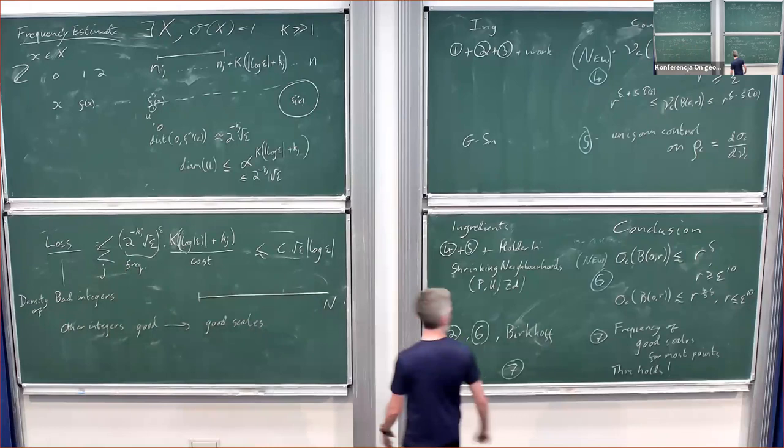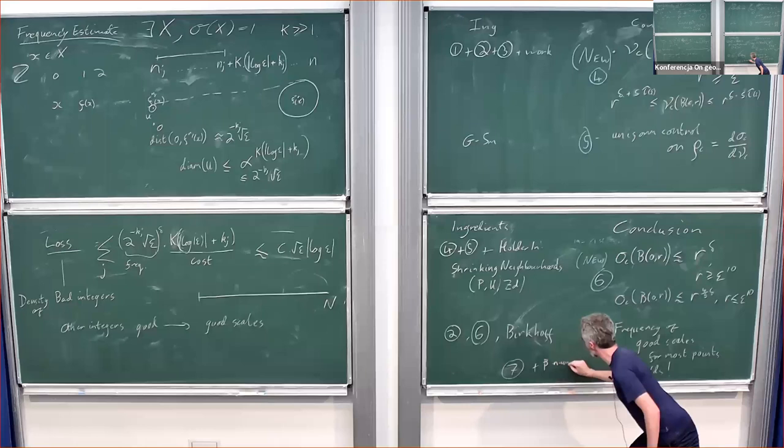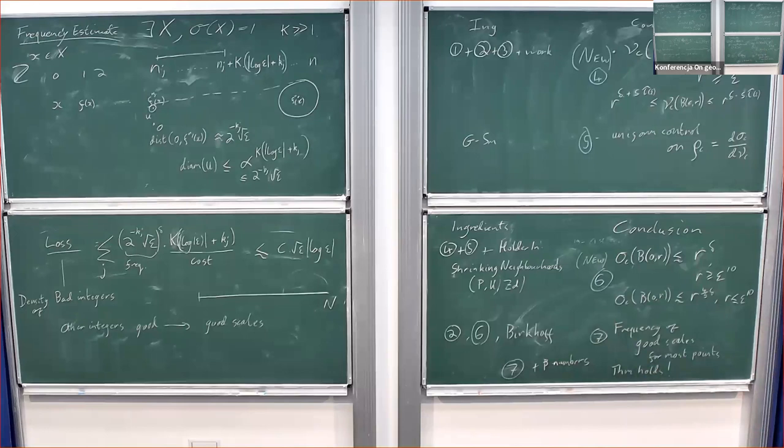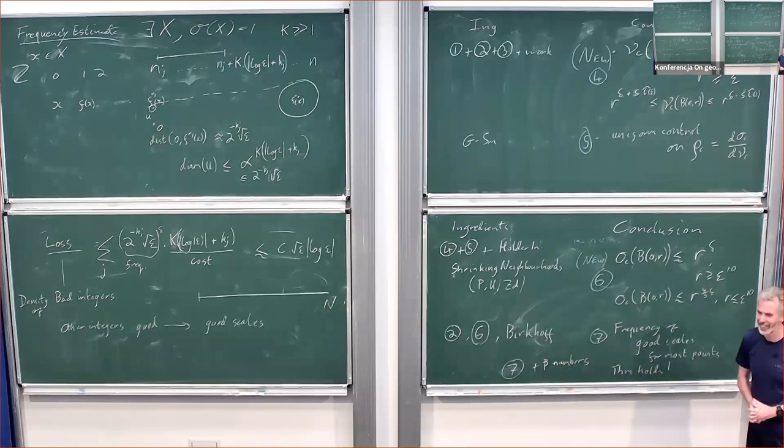Adding ingredient seven — frequency of good scales — and the beta number machinery of Graczyk, Jones, and Mihalache, the theorem holds. I think time is strangely up right at a good moment, so thank you for your attention.